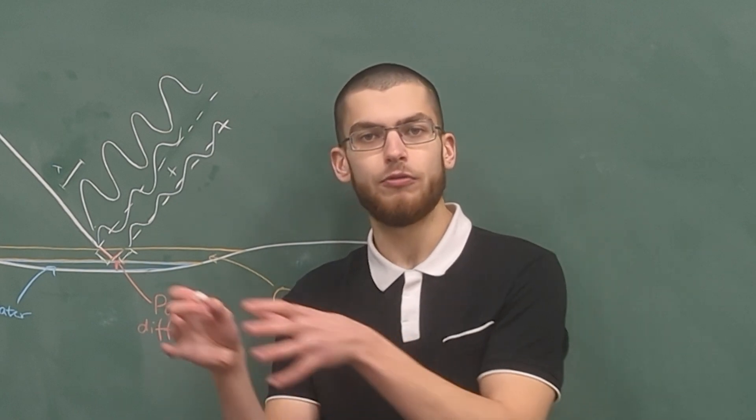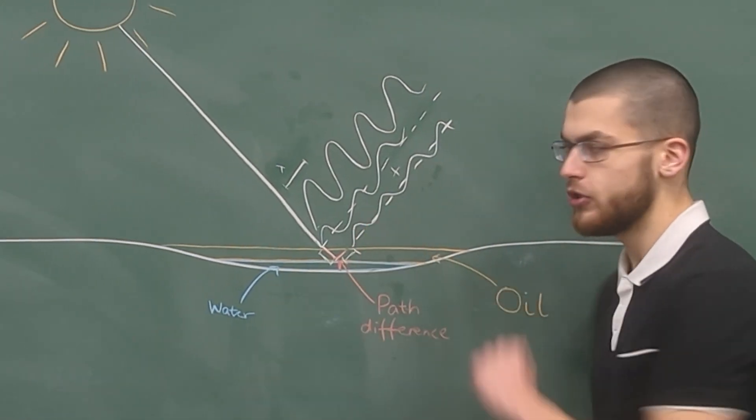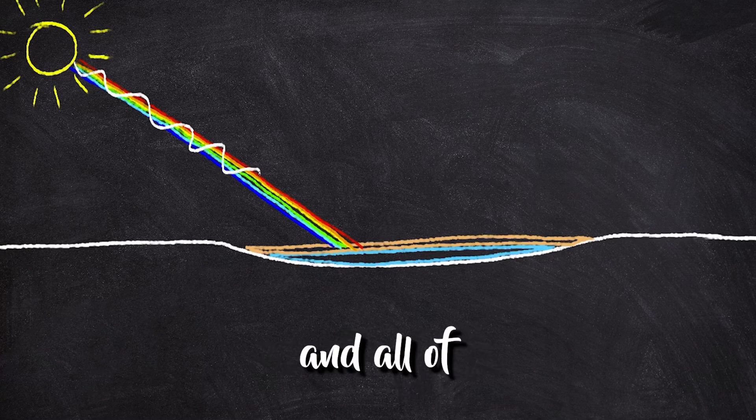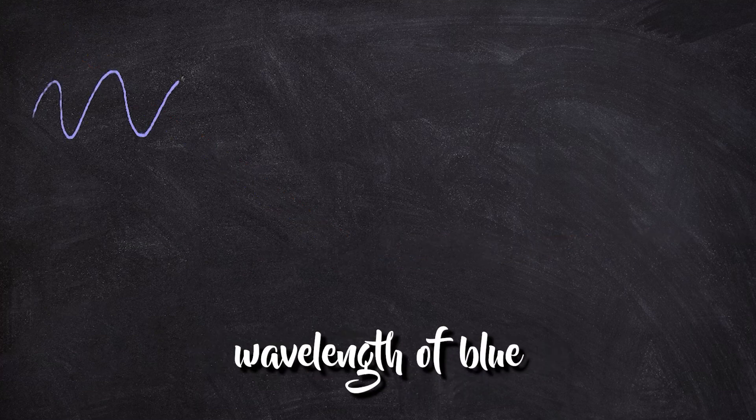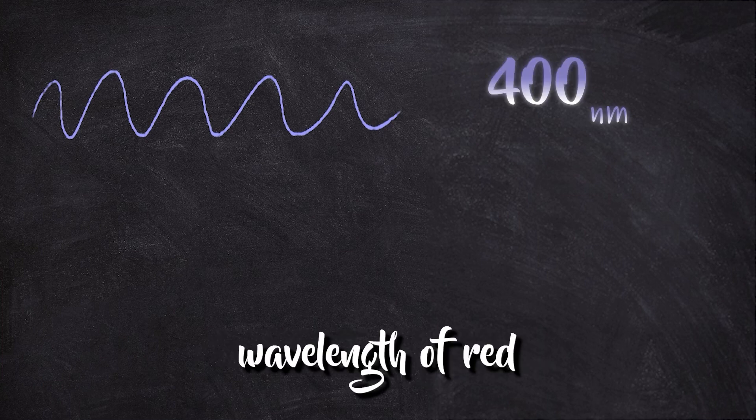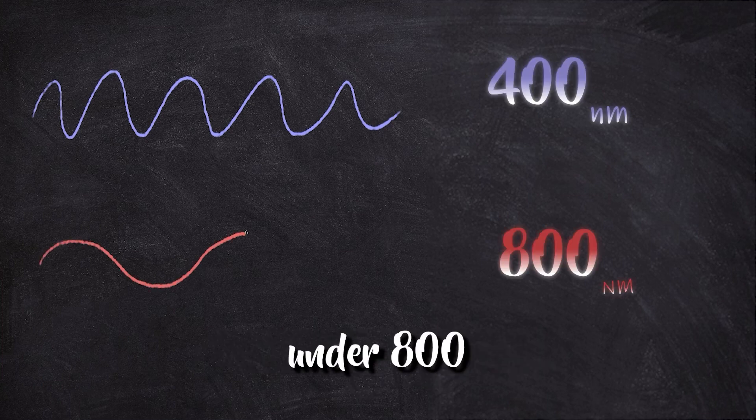So how can we get a rainbow of colors from changing the amplitude? Light from the sun has a whole range of different wavelengths, and all of these wavelengths hit the surface of the oil. For example, the typical wavelength of blue light is around 400 nanometers, and the typical wavelength of red light is just under 800 nanometers.